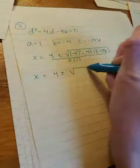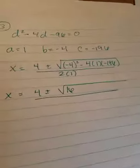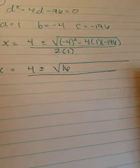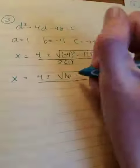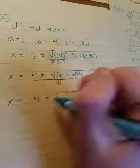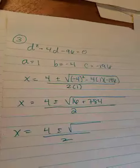So negative 4 squared is 16. Negative 4 times 1 times negative 196 gives us 784 divided by 2. So let's simplify under the radical.